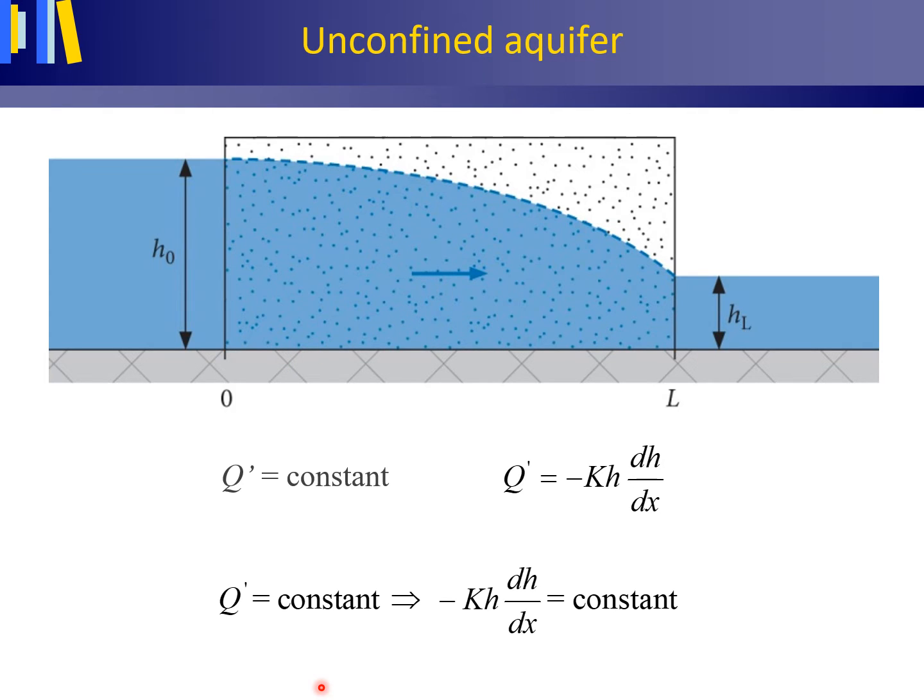As the volume flux Q' is constant, the aquifer is homogeneous, thus K is constant, and H diminishes from left to right, the hydraulic gradient dH/dx must become larger from left to right.